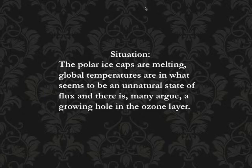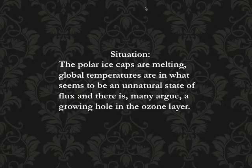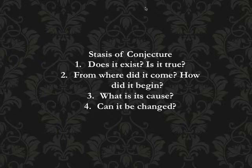You'll see just how contentious this argument can be. However, the difference is whether or not this is a problem. First of all, you have to come to a stasis of conjecture. Does it exist? Are the polar ice caps melting? Is it true? Some would argue that it's a natural cycle, or some would argue that it's not even happening at all. So from where did it come? How did it begin? What caused it, and can it be changed? The two people that are arguing have to agree that there is a situation.